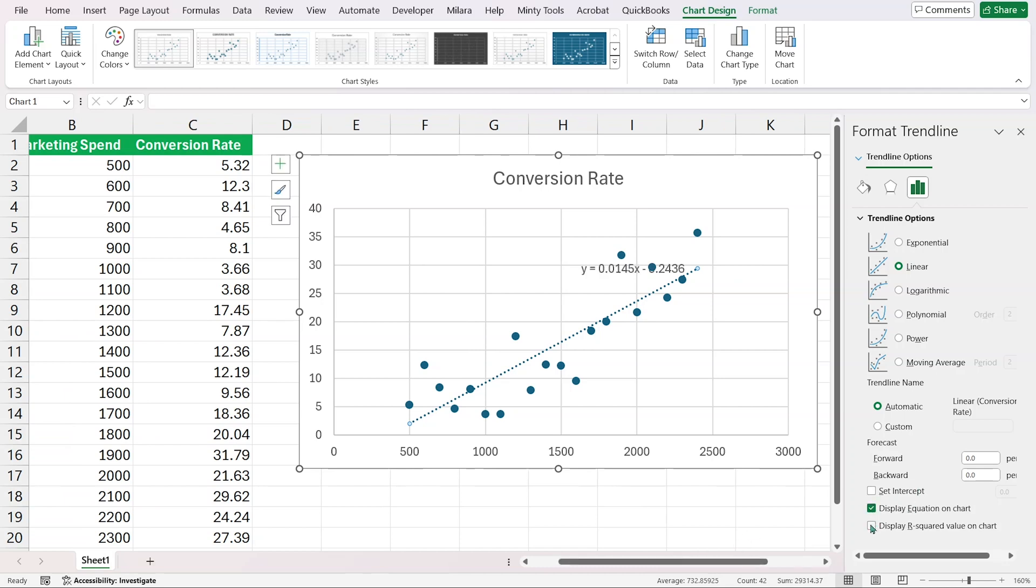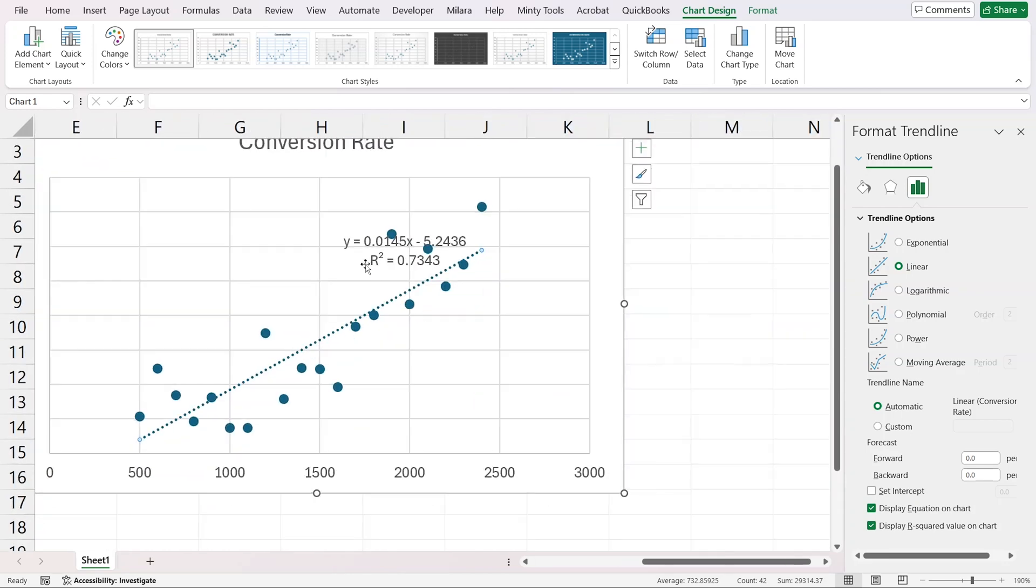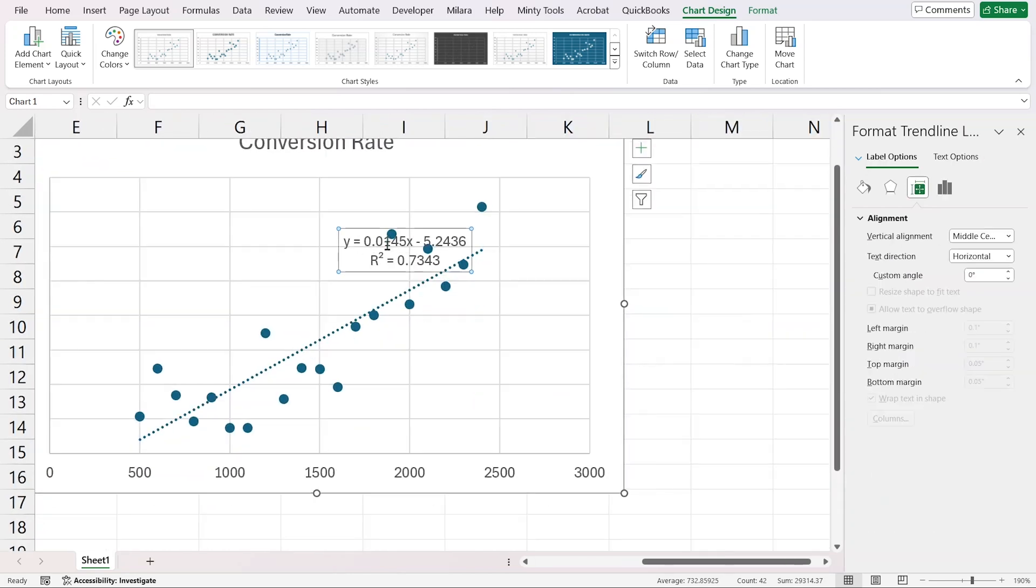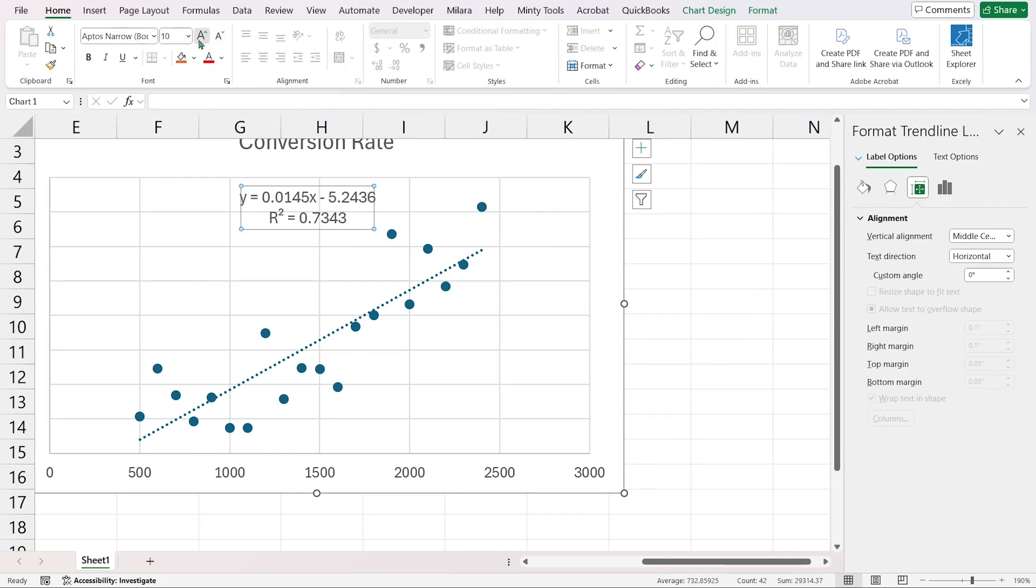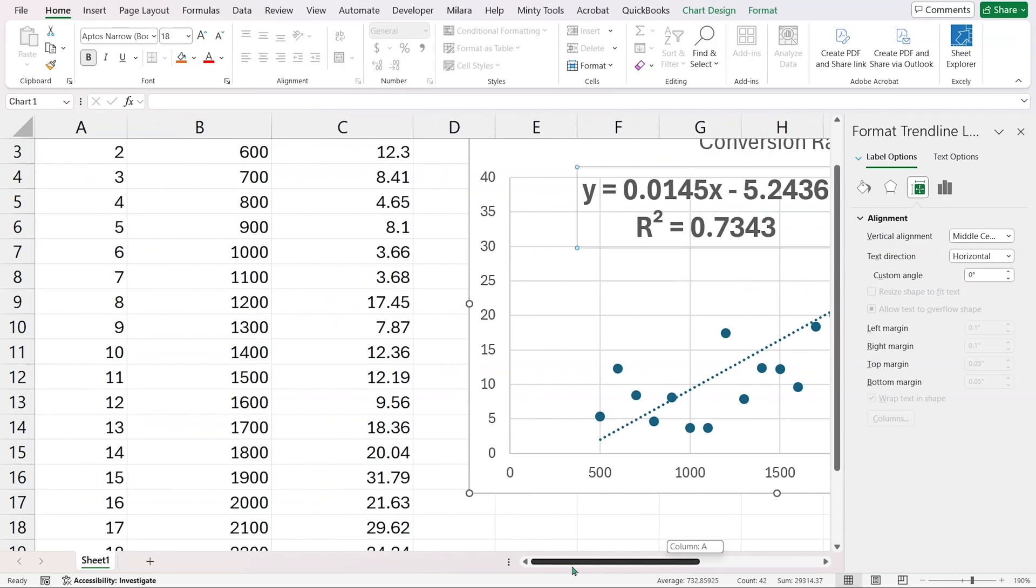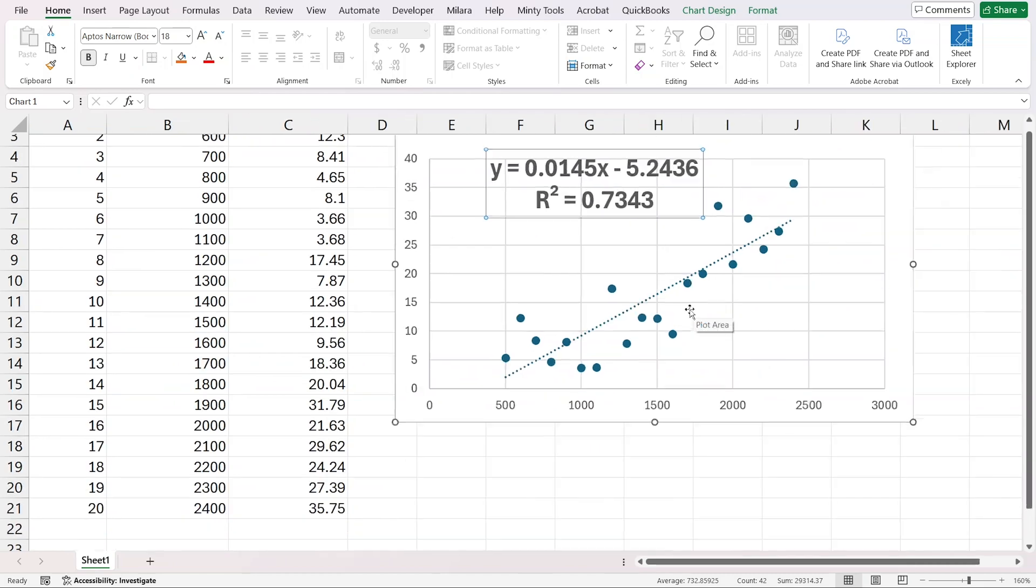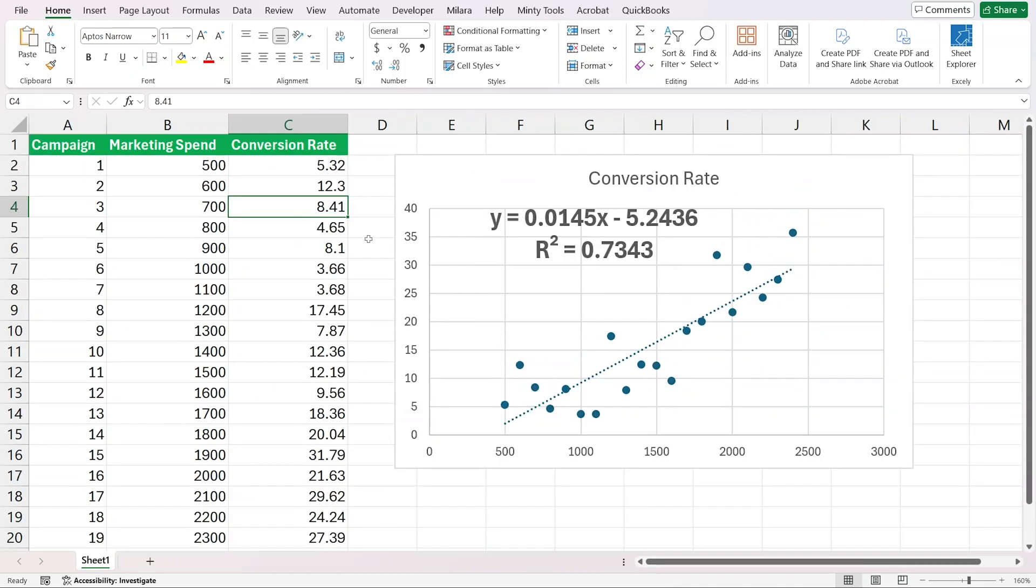We can also display the equation and the R squared. If we zoom in, you see our equation. Let's make it a bit bigger and bold it so it's easier to see. This is our equation: y the variable that we're predicting, the conversion rate, equals 0.0145 X, our marketing spend, minus 5.24. Our R squared, which is essentially showing us how good the line fits our data set, is pretty high, 0.73.